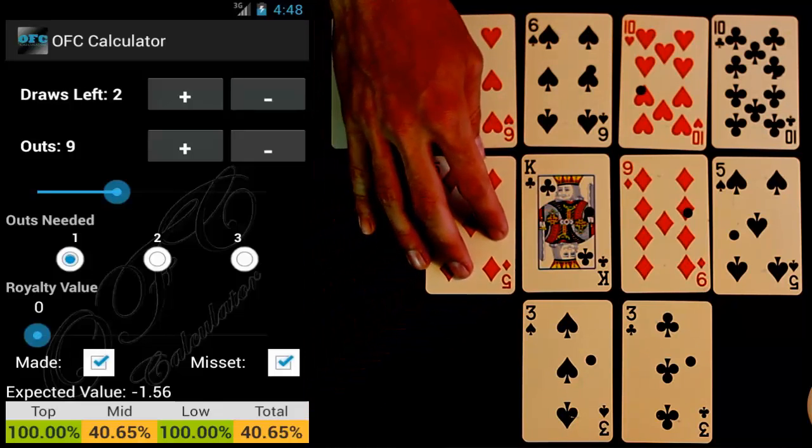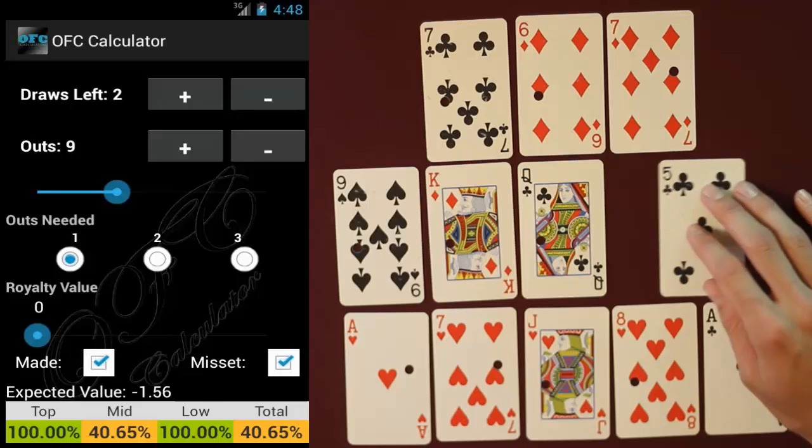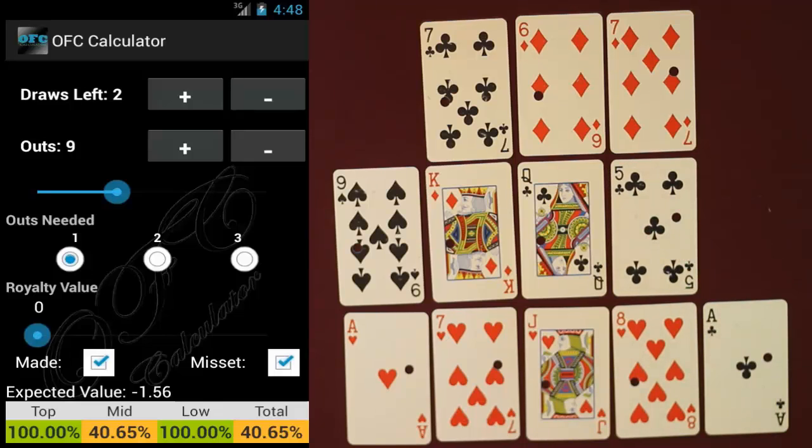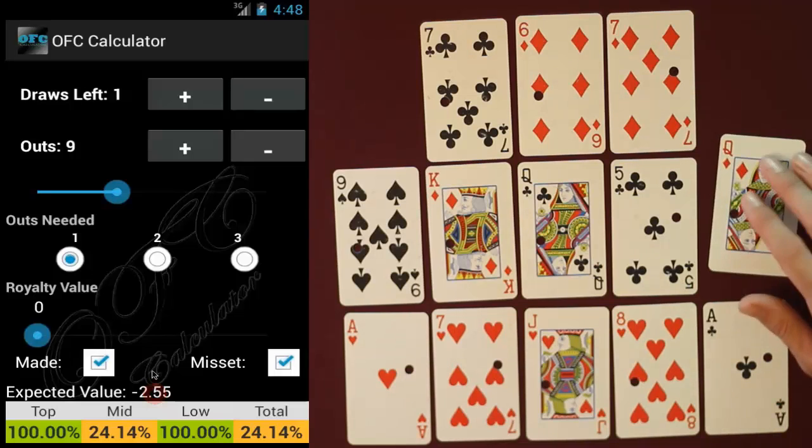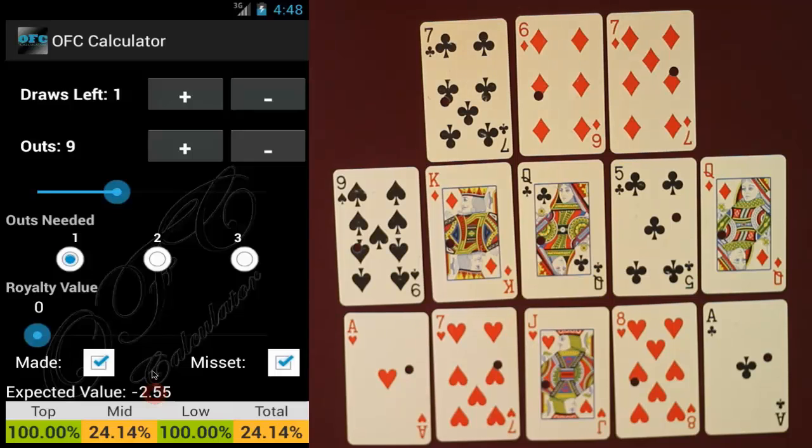Our opponent then draws the five of diamonds and we draw the five of clubs. At this point the calculator really has no more use since we have to play all our cards in the middle no matter what. But it still could be fun just kind of see what your percentages are and what not. So go ahead and click the negative sign next to draws left. And we end up hitting our queen to keep from miss setting. So not a terrible hand even though we didn't exactly win.